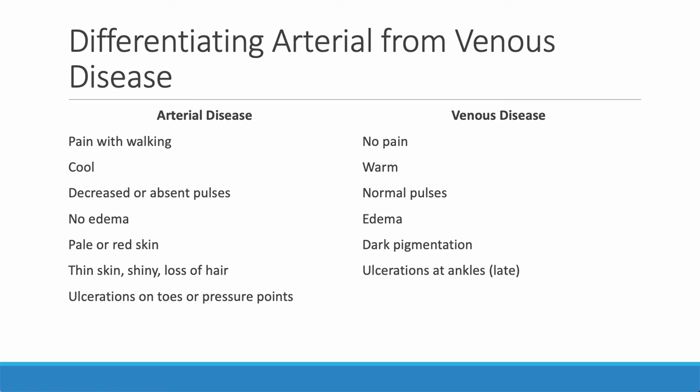With arterial disease, we may also see cool extremities if blood flow is really limited. We often see diminished or absent pulses, which is why we use Doppler devices to check. Particularly when these patients undergo surgery, we want to make sure they don't have an ischemic extremity. There is typically no edema. The skin is often pale or even red — the rubor that occurs with chronic arterial insufficiency. The extremities usually have thin, shiny, hairless skin.